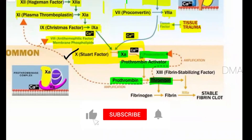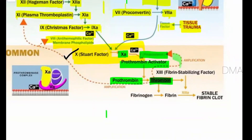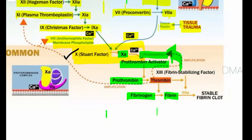This thrombin is itself an auto-stimulant, so it will further stimulate the activation of Factor 5. What thrombin then does is convert fibrinogen into fibrin. This fibrin starts as a single thread, and multiple fibrin threads are formed, which come together to form a network.